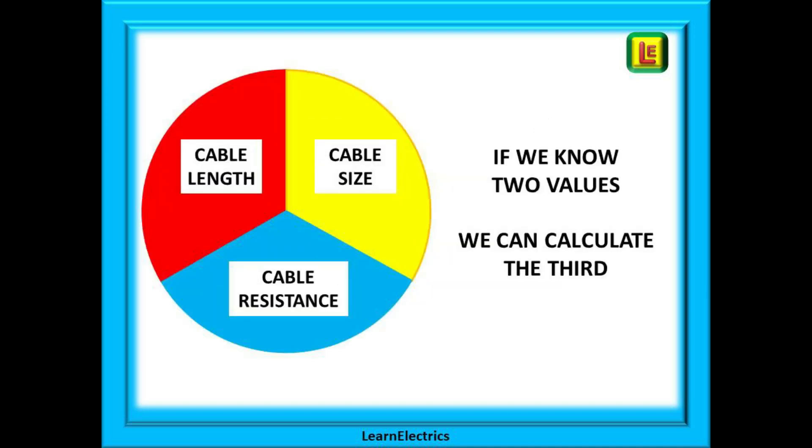The third value we have is the cable size but we would not normally be expected to calculate this. We should already know this by looking at the cable and many of today's cables have the size already molded into the plastic sheathing. As shown here if we know any two of the three values we can calculate the third and it is very easy.